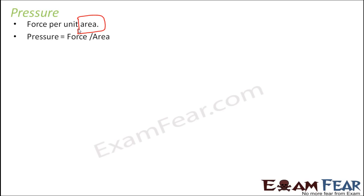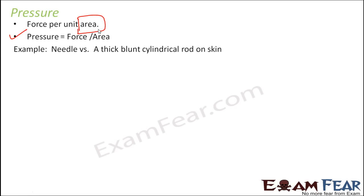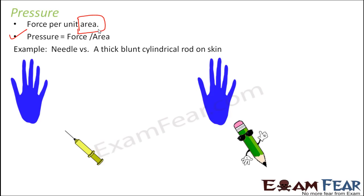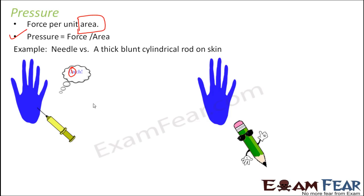So as per this definition, pressure is equal to force divided by area. Let us take the example of a needle and a thick blunt cylindrical rod. What happens if I prick a needle on your skin? In the first example, it is a sharp pointed needle. If I try to prick you with this needle, you will feel pain because it actually penetrates through your skin. Now if I repeat the same activity but replace the needle with a thick blunt cylindrical rod — maybe the back side of your pencil.